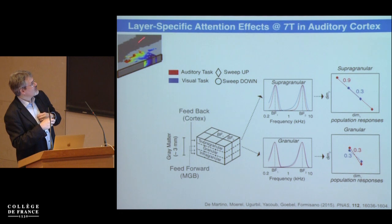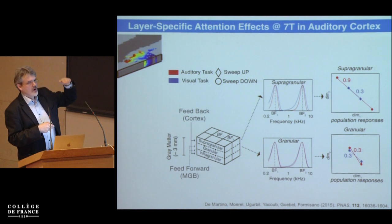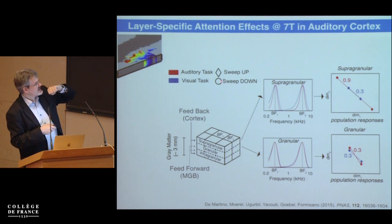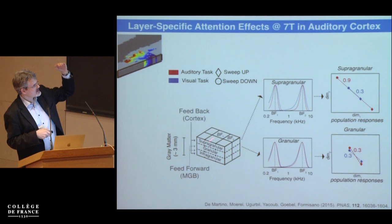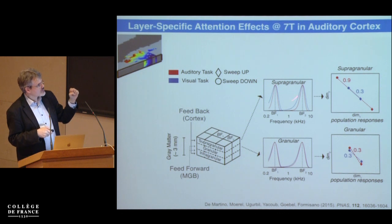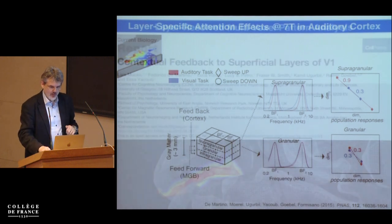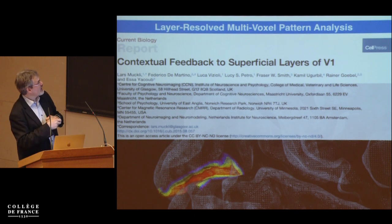Here's an attention experiment using the same A1 columnar mapping. Subjects heard auditory sweeps and also saw visual stimuli; they could attend to either. When attending to the auditory sweeps, only the supragranular — upper — layers sharpened their tuning curves, indicating preparation for better discriminability. This sharpening effect was unique to the upper layers and was not observed in middle granular or deep layers. This shows that the depth dimension is also informative, not only the horizontal.